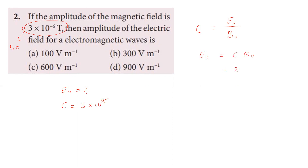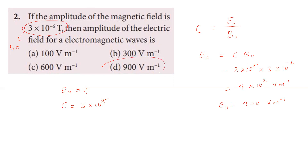C equals 3×10⁸ and B₀ equals 3×10⁻⁶ T. So E₀ = 3×10⁸ × 3×10⁻⁶ = 900 volt per meter. The amplitude of the electric field intensity is 900 volt per meter. The second question answer is the fourth option, which is correct.